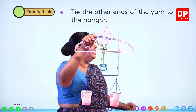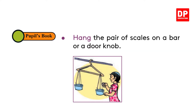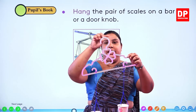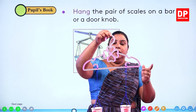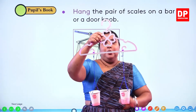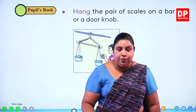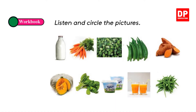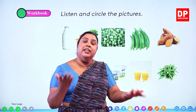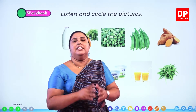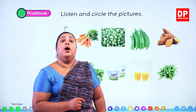Now we have our both sides neat and nice and it looks like this. Hang the pair of scales on a bar or a door knob — you can actually hang this on a little bar. Now we are done with our beautiful pair of scales. Since we have completed the scale, now it's time for us to do our workbook activity. You can take the ideas — I know you are all very creative. You can create your own scales and do it really well.